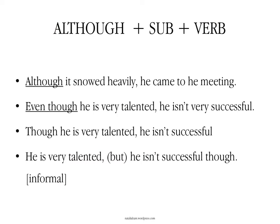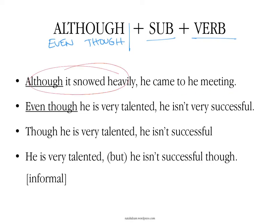So you use 'although' or 'even though' — they mean exactly the same. Then a subject and a verb, in the present, past, future, whatever. You can say things such as: although it snowed heavily, he came to the meeting. This is the problem, and this is the result. Or: even though he is very talented, he isn't very successful. You could even use 'though' in the same way: though he is very talented, he isn't successful. So you could add 'though' to this list.